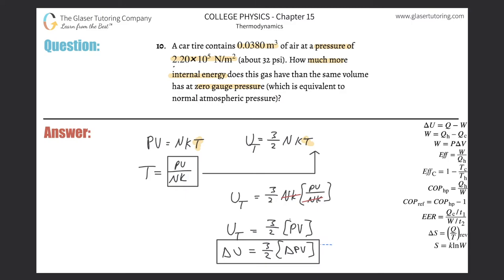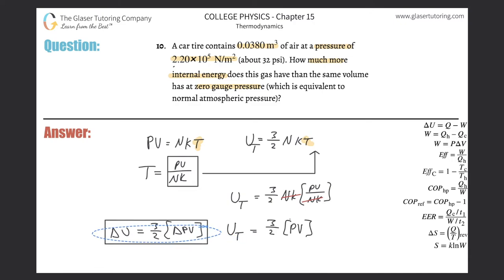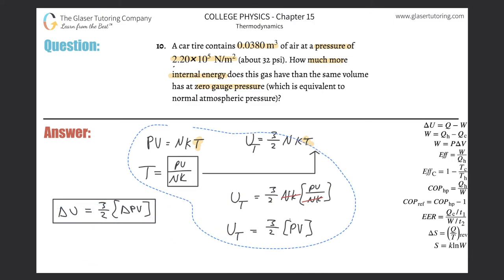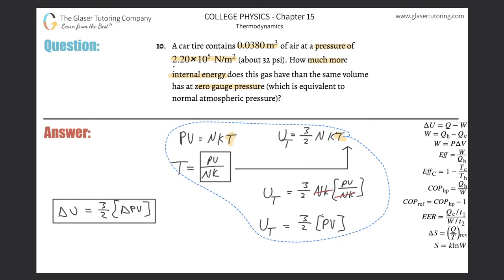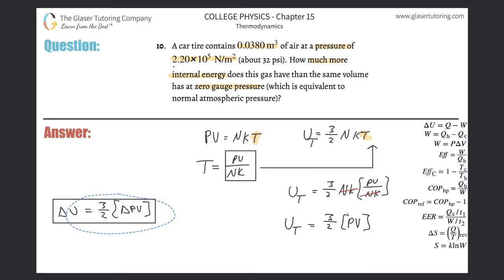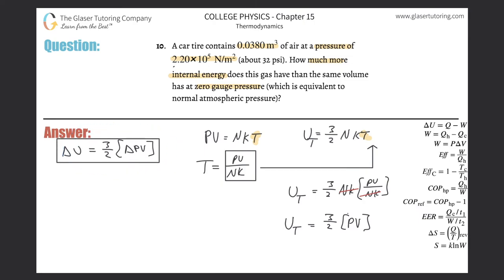So let's just move this on over. So basically, all I now need to do is just plug in my values. The change in internal energy is then going to be equal to 3 over 2 times the change in pressure.